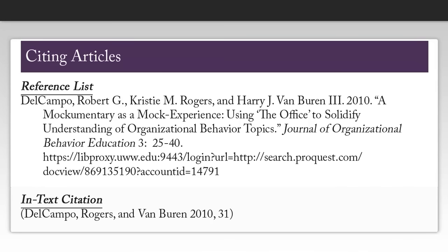Now that we have gathered all of this information, we can create our citation. One thing to note is that when you have more than one author, the first author will be last name, first name, and all subsequent authors will actually be first name, last name, with an 'and' right before the very last author. You'll notice that I have no issue number, so I just skipped over that part in my citation. And rather than using a DOI, I used the permalink from the database.